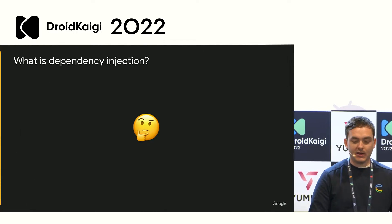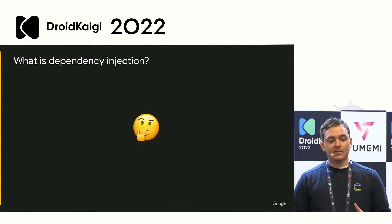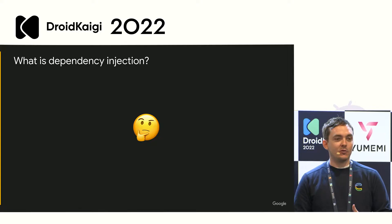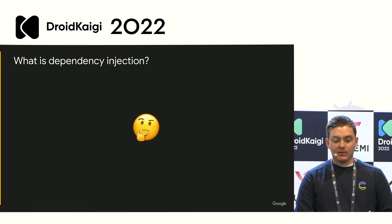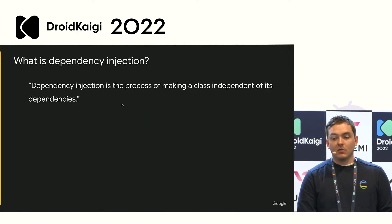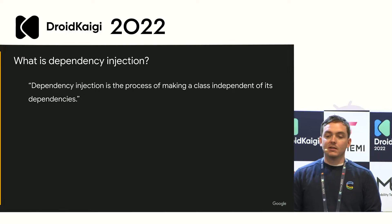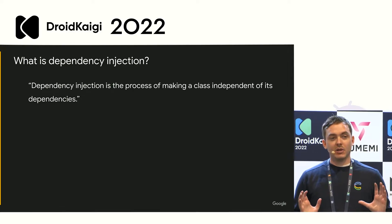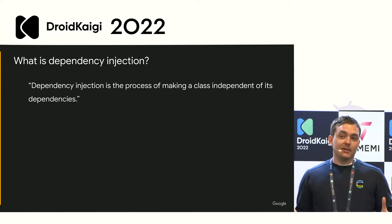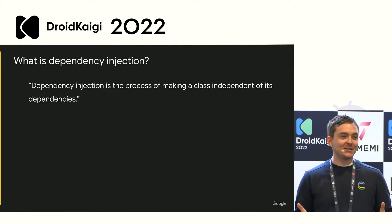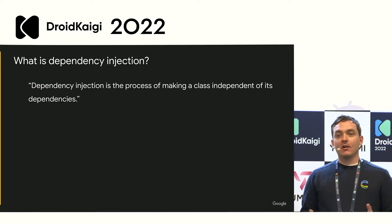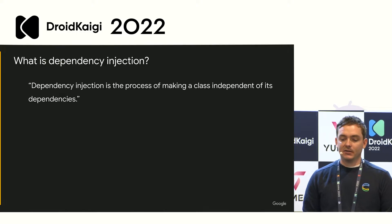So what is dependency injection? I think this is an important thing to get started with. When I was working on this talk, I had a really hard time trying to figure out how to simply explain this to someone who knew nothing about it. But there was one quote that really stuck with me: dependency injection is the process of making a class independent of its dependencies. Some people will hear that and think it makes sense, but I'm willing to bet a lot of people will have no idea what that means — don't worry, we're going to dive into some examples.